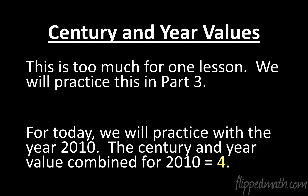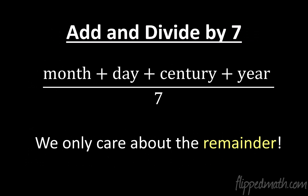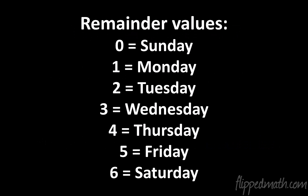There are also century and year values — we will do those in the next video, part three. For this lesson, I'm going to have you focus on the year 2010, and I'm telling you that the century and year value give you a combined value of 4. You don't have to know how to calculate that yet. So what you do is take the month value, the day value, the century value, and the year value, add them all up, divide by 7, and we only care about the remainder — what's left over. That remainder gives you the day of the week.